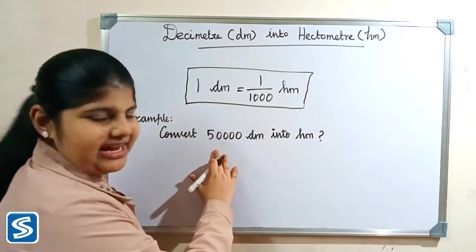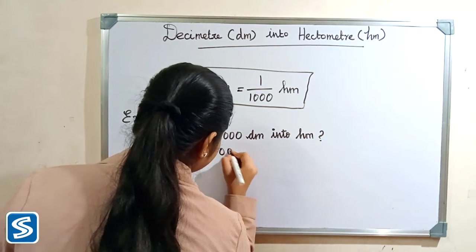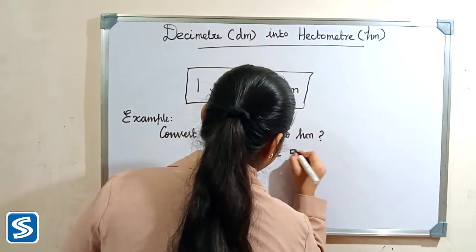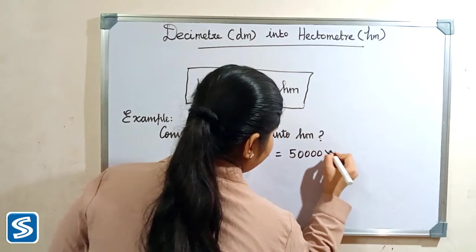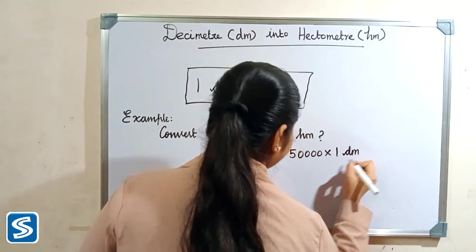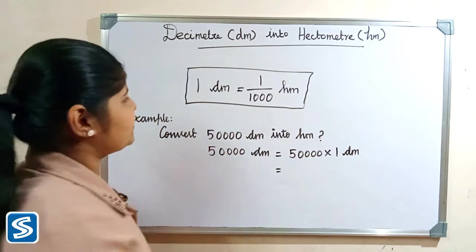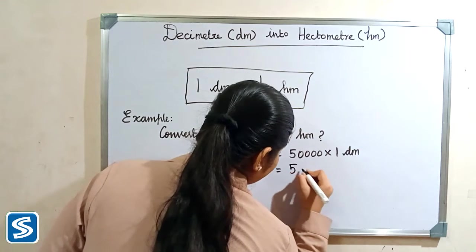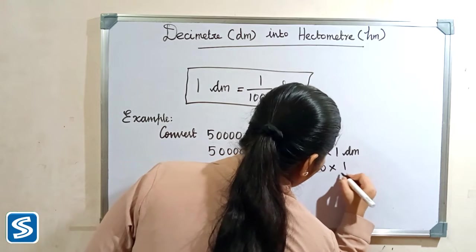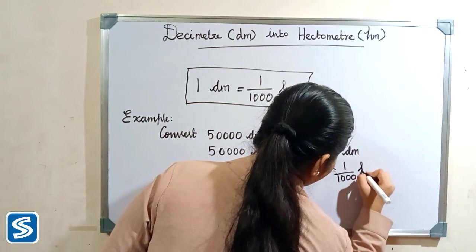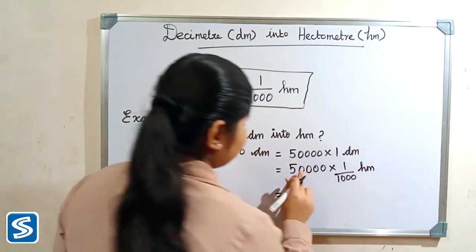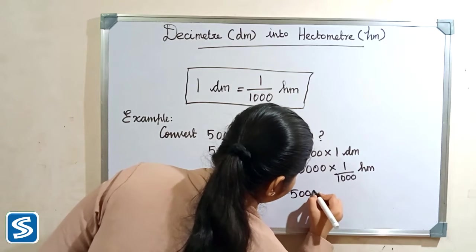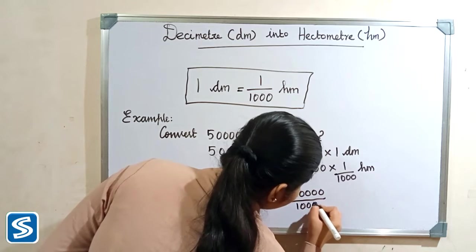So 50,000 decimeter can be written as 50,000 multiply one decimeter. Now we have to substitute one by thousand hectometer in the place of one decimeter. So it becomes 50,000 multiply one by thousand hectometer. 50,000 multiply one will be 50,000, so we have 50,000 by thousand hectometer.